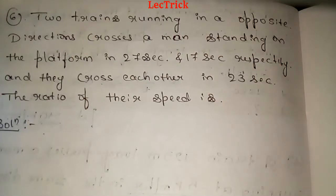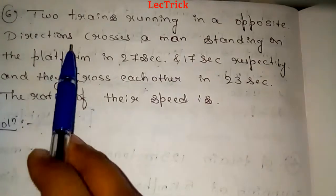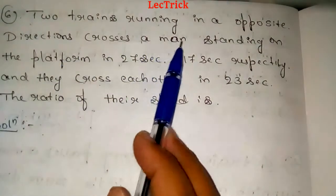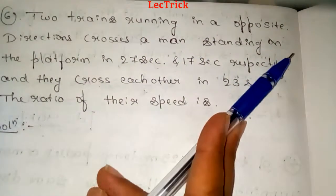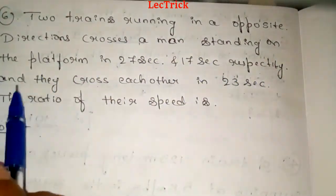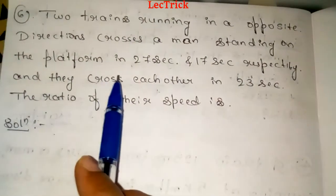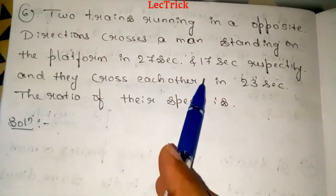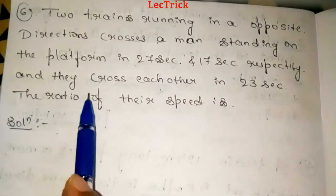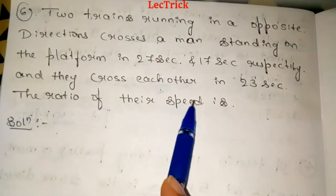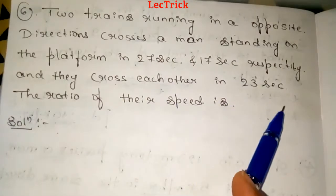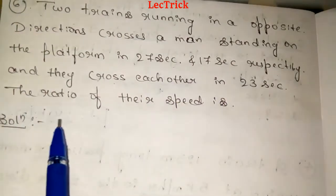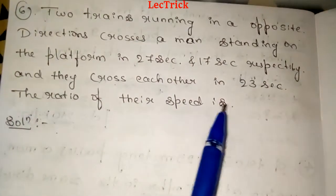Now we have to solve these problems with trains. Two trains running in opposite directions cross a man standing on the platform in 27 seconds and 17 seconds respectively, and they cross each other in 23 seconds. Find the ratio of their speeds.